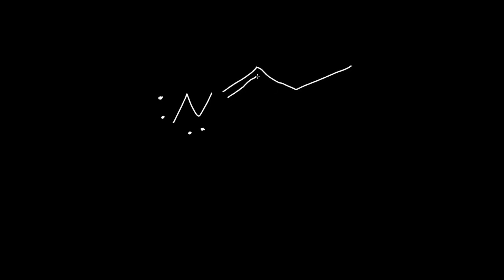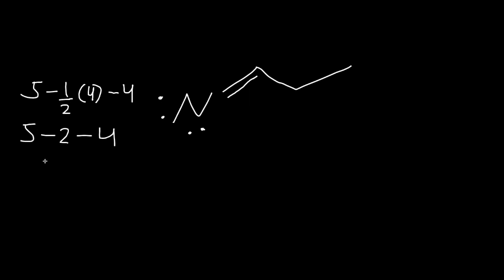Let's try some with bond line structures. Here we have nitrogen — to calculate the formal charge, nitrogen has five valence electrons, minus half of how many bonds it's connected to: one, two — two bonds is four electrons — and one lone pair is four electrons, so minus four. Half of four is two, so five minus two is three, minus four equals negative one. So nitrogen has a negative charge here.